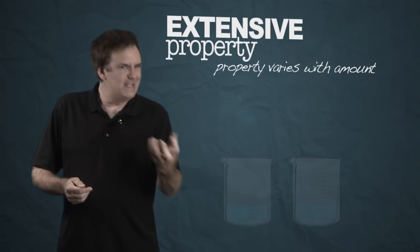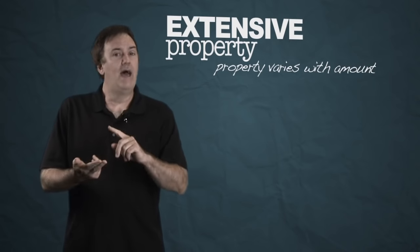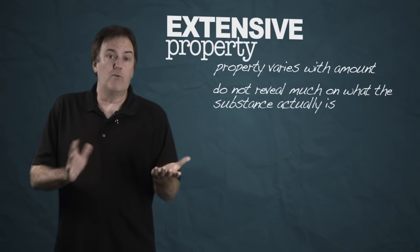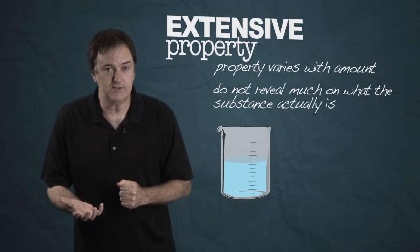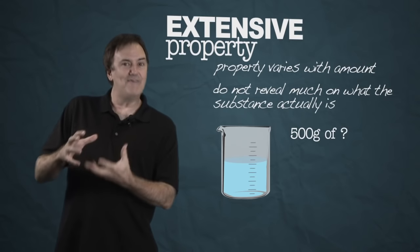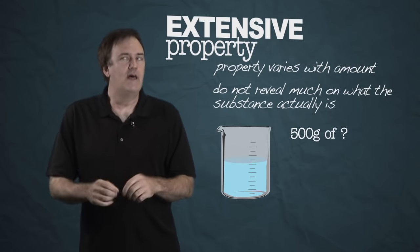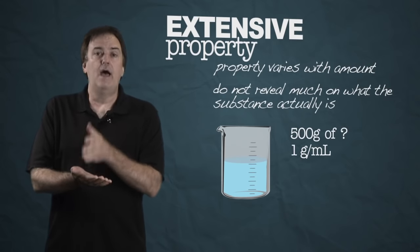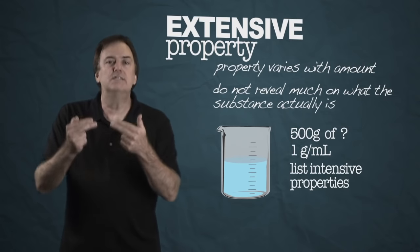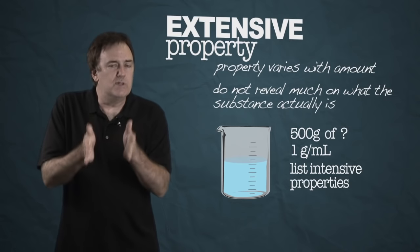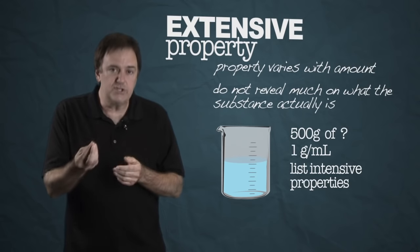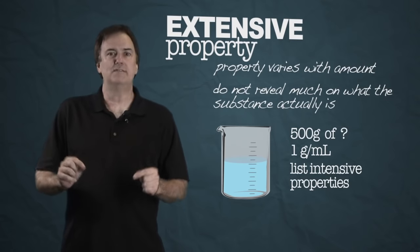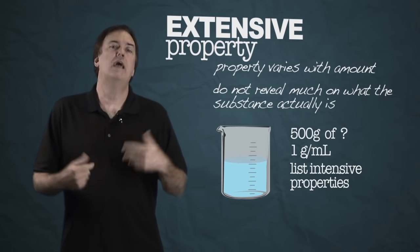This is an important concept you'll see over and over in chemistry: is an answer an intensive or extensive property? Extensive properties by themselves don't reveal much about what a substance actually is — telling you something is 500 grams only tells you the amount. But telling you a substance has a density of one gram per milliliter really limits what it could be. In chemistry, we characterize matter by listing intensive properties, because a good listing of them truly identifies a substance uniquely.